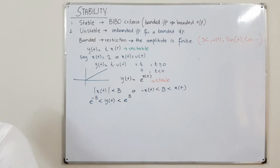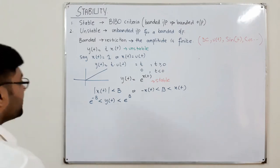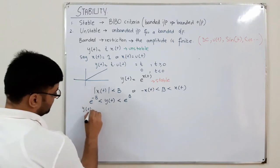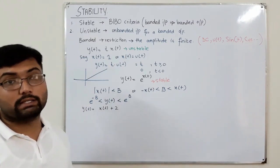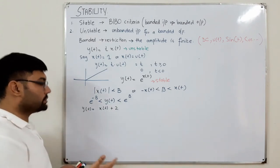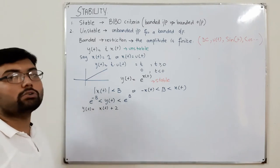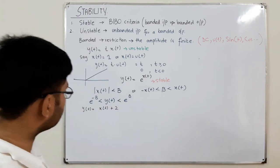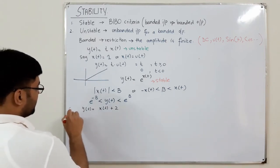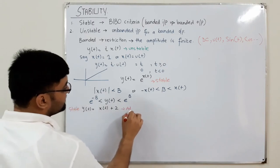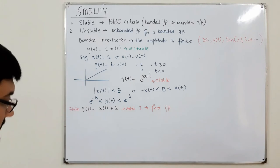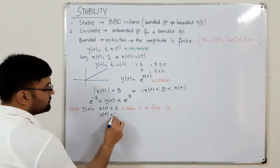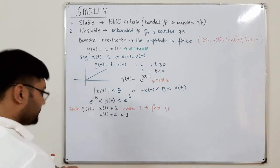Another example: y(t) = x(t) + 2. The system takes the input x(t) and adds 2 to it. If you provide any bounded input, it would add 2 to it, and adding 2 to something finite is again something finite. So this system is a stable system. For example, if x(t) = u(t), then y(t) = u(t) + 2, which gives 1 + 2 = 3 for t greater than 0.